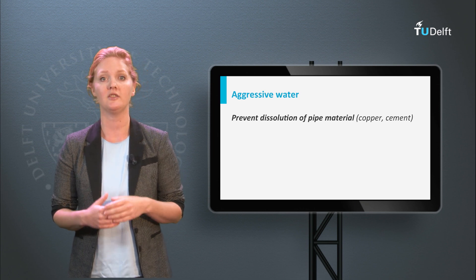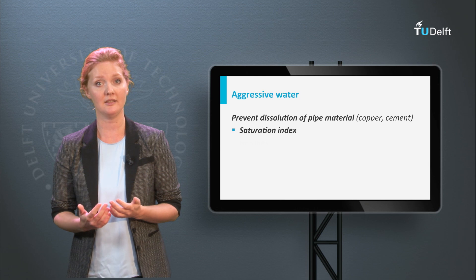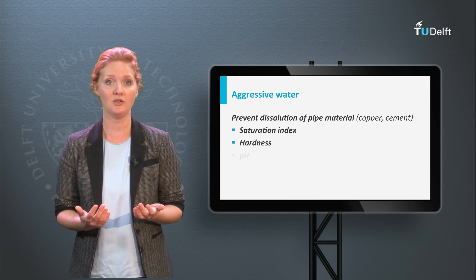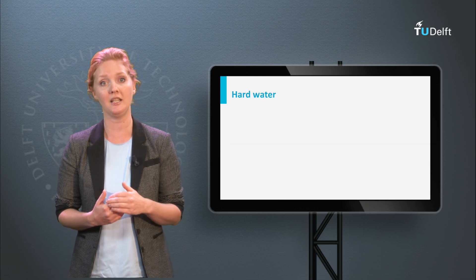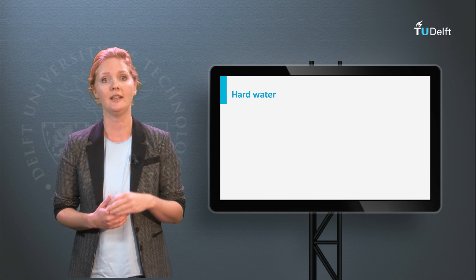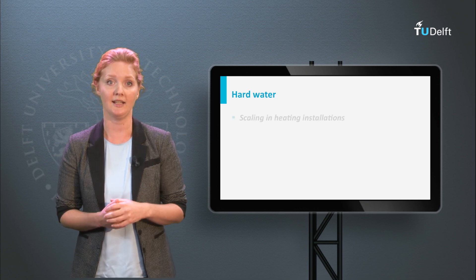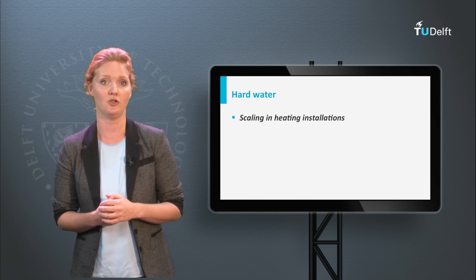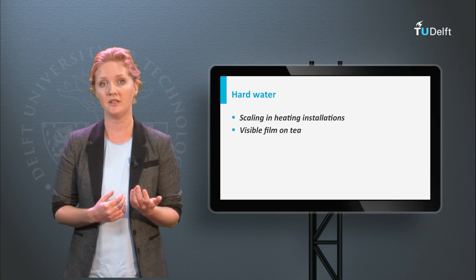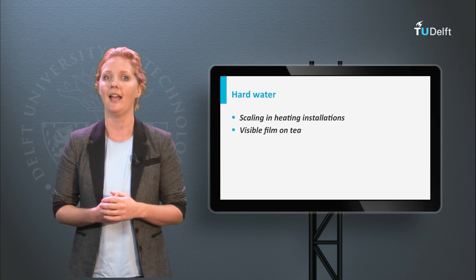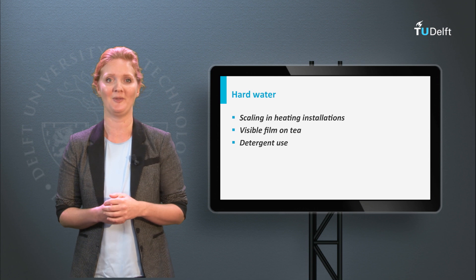To prevent aggressive water and pipeline dissolution, the saturation index, hardness and pH are important parameters. The hardness of water, expressed as calcium and magnesium ions, is also important as it may cause scaling in heating installations, a film on tea, and less effective use of detergents.